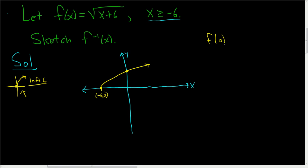To find that point, you just plug in 0, and you get 0 plus 6, which is the square root of 6. So it crosses this point here at 0, square root of 6.